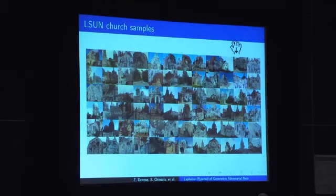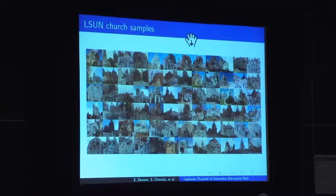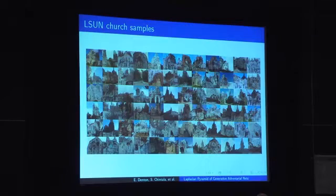Here is a set of random samples from a model trained on churches. These are 64 by 64 resolution, which is larger than previous models were able to achieve. You can see a fair amount of variability in the images and a lot of detailed structure. From far away they look like churches, and if you look up close you will see some warped details, but they are fairly realistic images.